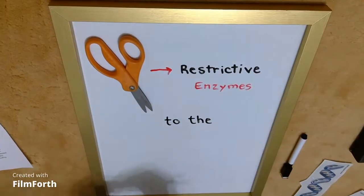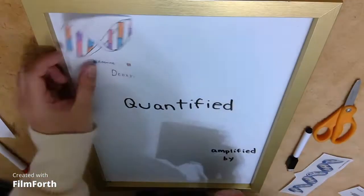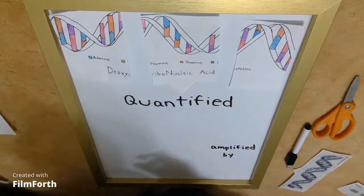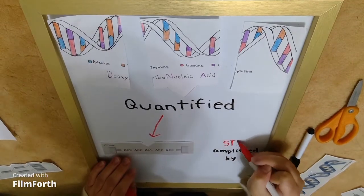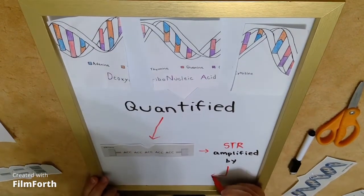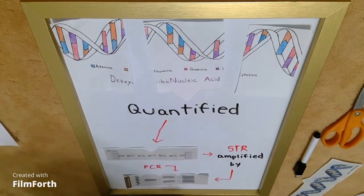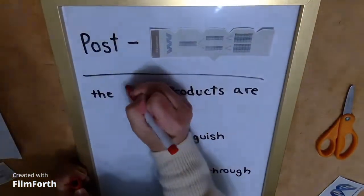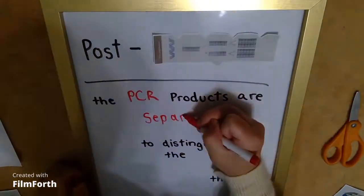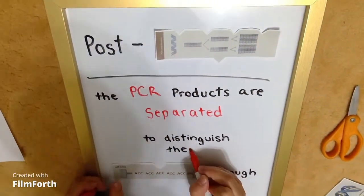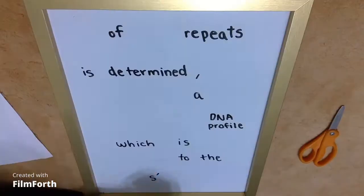Restrictive enzymes are added to the DNA, cutting it into smaller segments. These segments are then quantified, and the STR loci are amplified using primer sequences, part of a technique known as polymerase chain reaction that copies specific regions of DNA. Post-amplification, the PCR products are separated to distinguish the STR regions through either gel electrophoresis or capillary electrophoresis.